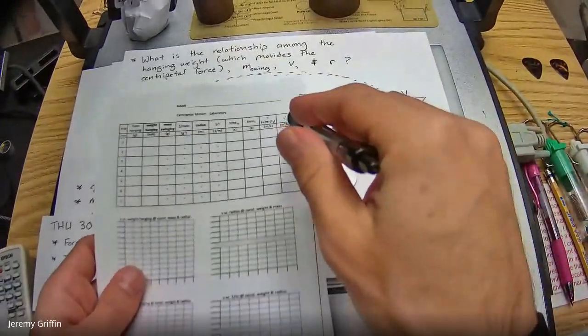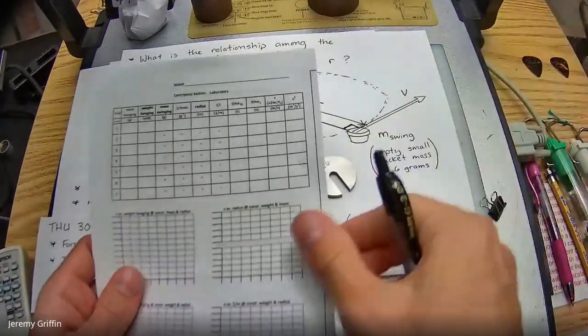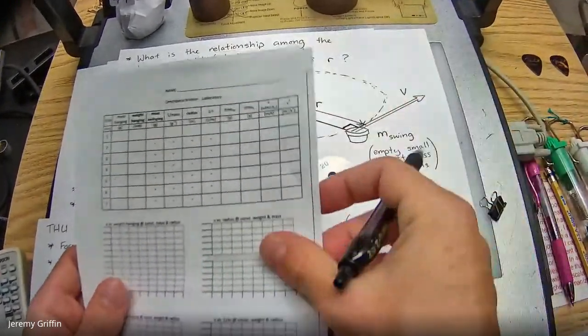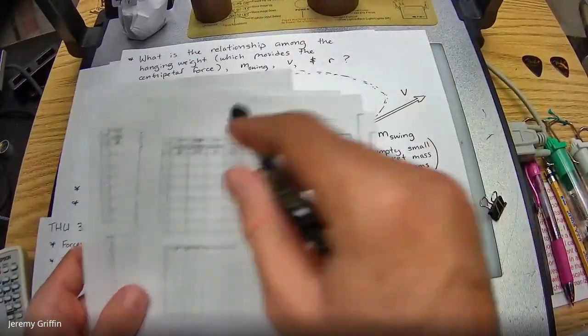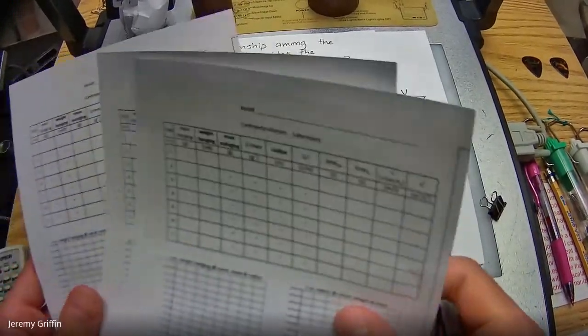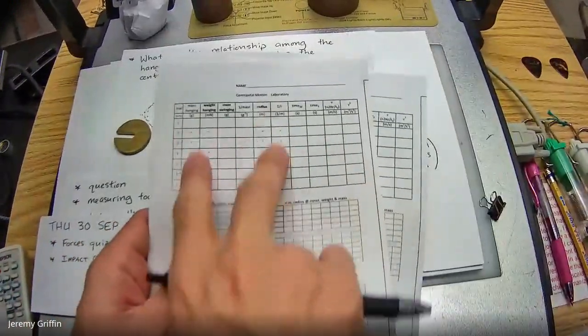And so then you have the very last column says to square that speed. That probably doesn't make any sense right now, but it'll make sense by the end of the lab.